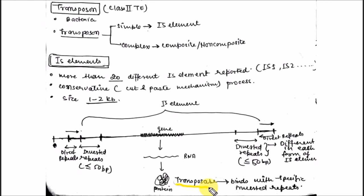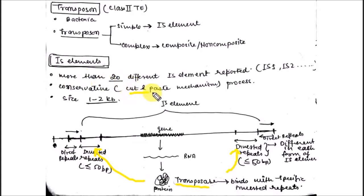Transposase is very specific to the inverted repeats and to the IS sequences. These transposases bind to the inverted repeats, which cuts the IS element from that segment. The IS element works by the cut and paste mechanism, meaning the transposase enzyme is required for the functioning of the IS element in bacteria.